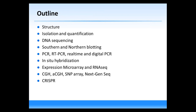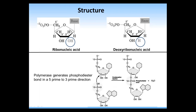As an outline, we will look at structure of RNA and DNA, isolation and quantification, DNA sequencing, Southern and Northern blotting, PCR, RT-PCR, real-time and digital PCR, in-situ hybridization, expression microarray and RNA sequencing, CGH, array CGH, SNP array and next-generation sequencing, and finally an introduction to CRISPR.